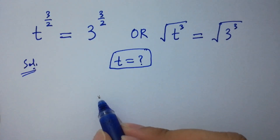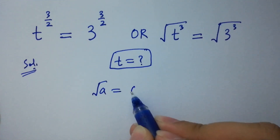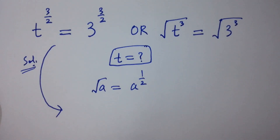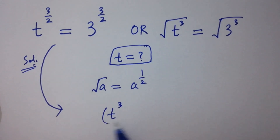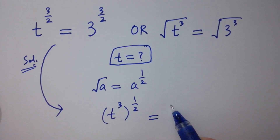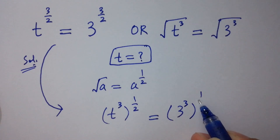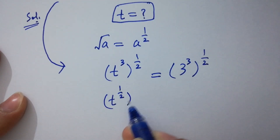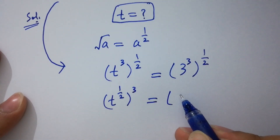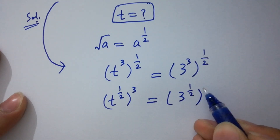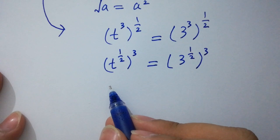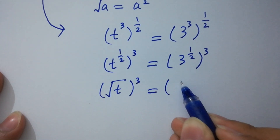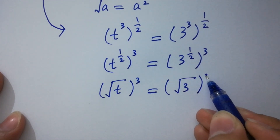As we know, the square root of a equals a to the power of one half. So we can rewrite the equation as t to the power 3, to the whole power one half, equals 3 to the power 3, to the whole power one half. This is the same as square root of t, to the whole power 3, equals square root of 3, to the whole power 3.